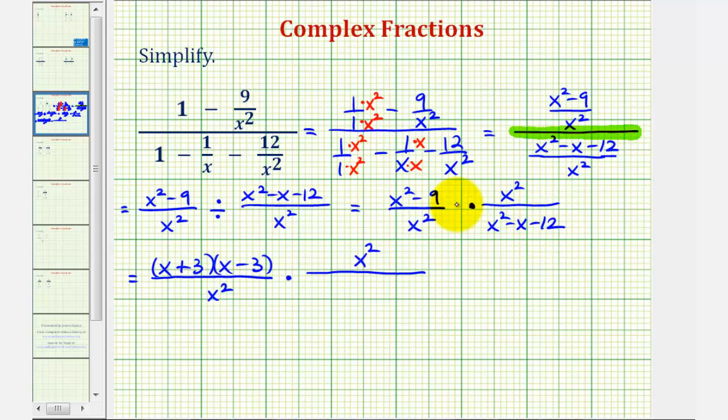Then, x squared minus x minus twelve also factors into two binomial factors. Factors of x squared are x and x. The factors of negative twelve that add to negative one would be negative four and positive three. So we have x minus four and x plus three.